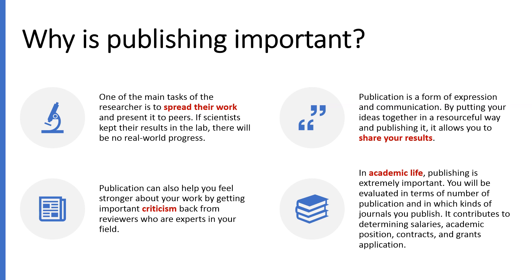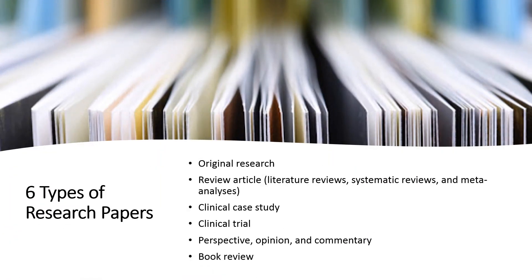The good thing about research is that there is no one standard way. This means there are many ways to share your work and to get published depending on your domain. The main difference between research papers and other forms of publishing is that research papers are often strengthened by facts and statistics. There are different types of scholarly literature, some of which require original research, also regarded as primary literature, and some that are based on other published work, known as secondary literature.